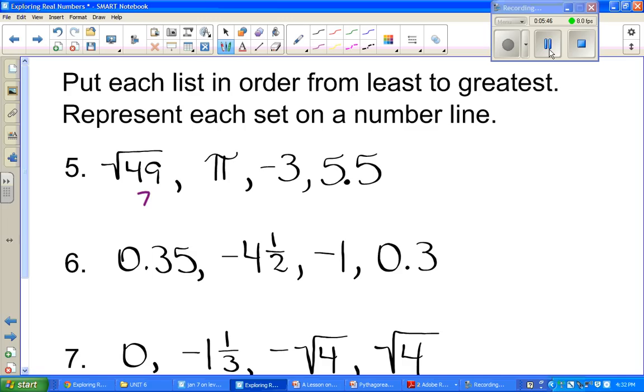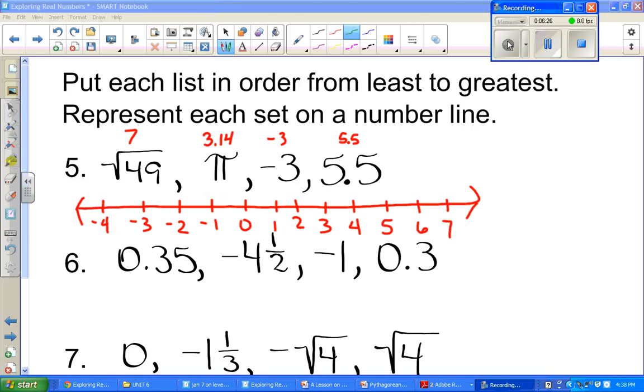The next one that you have, the next one is pi, and pi is approximately 3 and 14 hundredths. You can put 3.14 dot, dot, dot. It is an irrational number, but we're going to say it's about 3 and 14 hundredths. The next one's negative 3. Do not forget that negative sign. When I look at that, I know that that's going to be my smallest one when I'm putting it on a number line. And then you have 5 and 5 tenths.